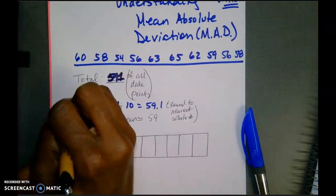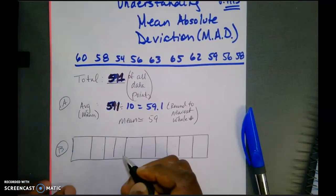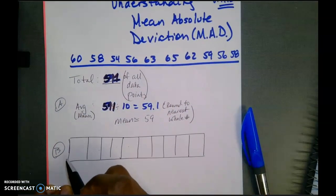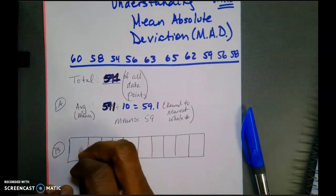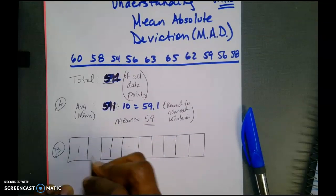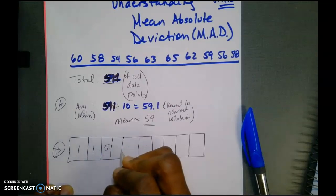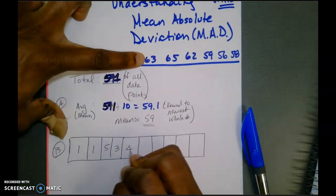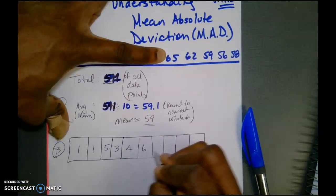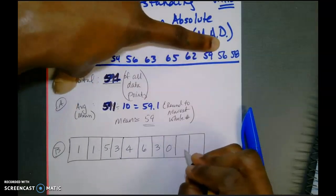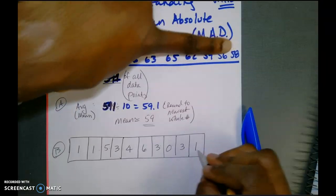Now in this second step, what I want to do is I want to find the distance. If I were to think about a number line from each one of these numbers, so the distance from each one of those numbers is going to be, if I'm finding the distance from 59 for 60, it'll be one. From 58, one. From 54, five. From 56 is going to be three. From 63 is going to be four. From 65 is going to be six. From 62 is going to be three. From 59, zero, of course. 56 is going to be three again. And from 58, it will be one.